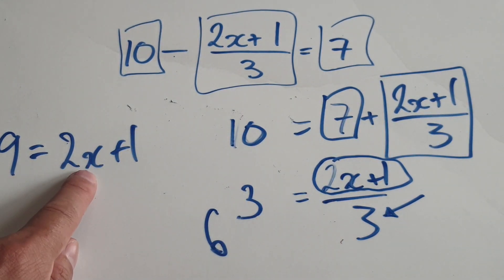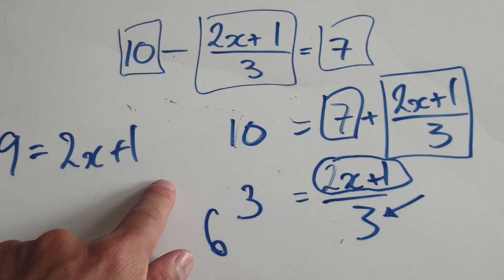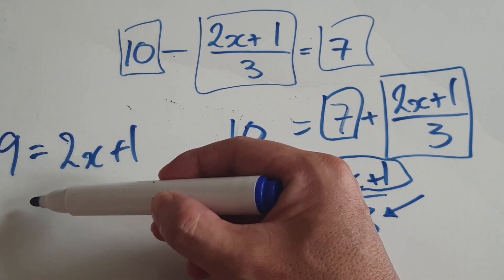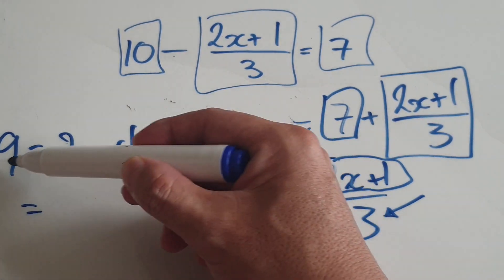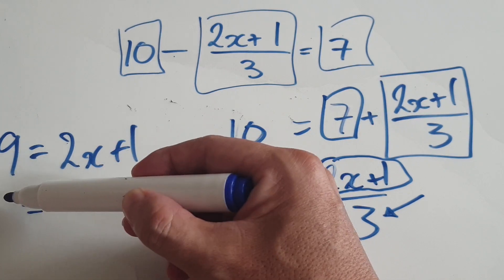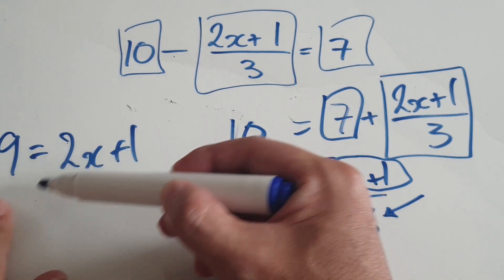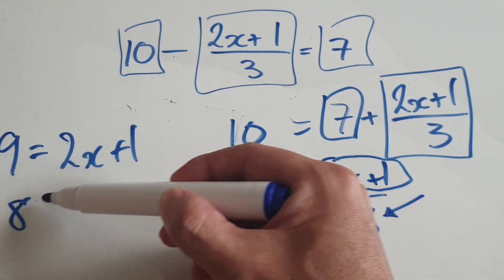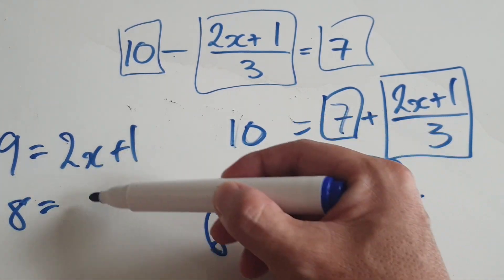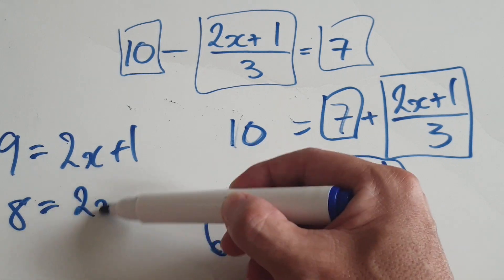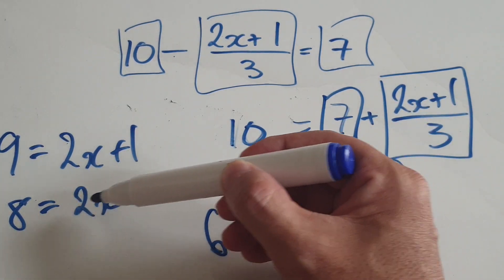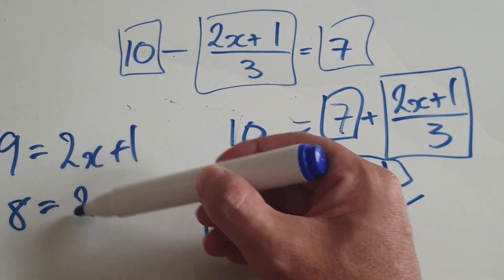Now you want to get x on its own — kill off the one. In your mind, take away one from both sides. When you take away one on this side it would just be eight, and then take away one on this side it would be 2x.